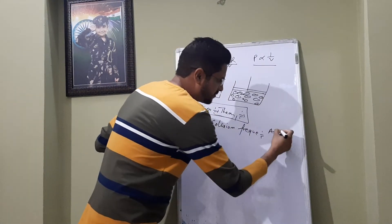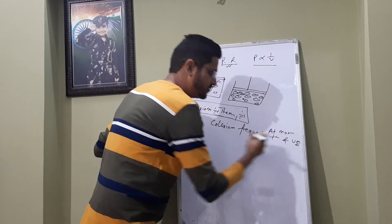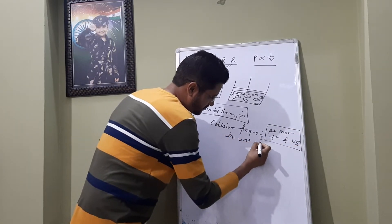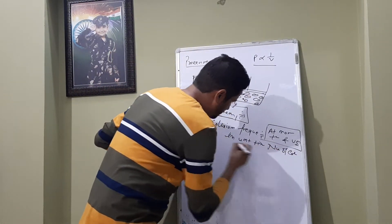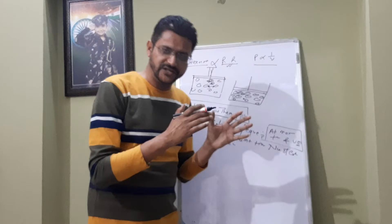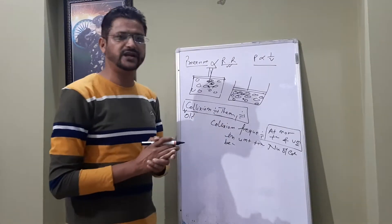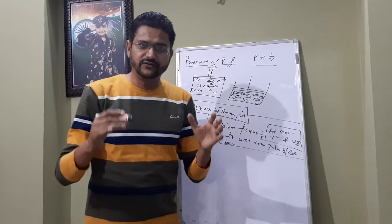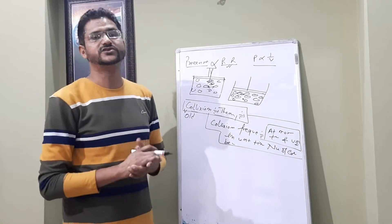At normal temperature and pressure, in unit time, the number of collisions between reactant molecules is called collision frequency. When collision frequency increases, the rate of reaction also increases. This is the key idea of the old collision theory.